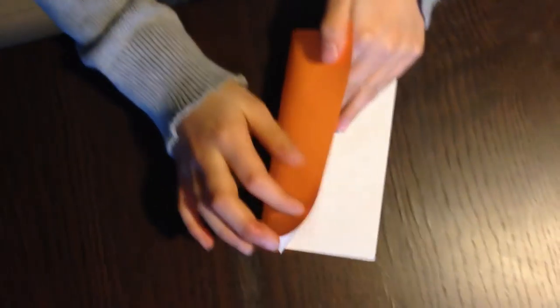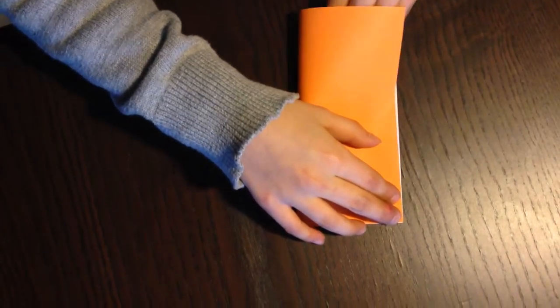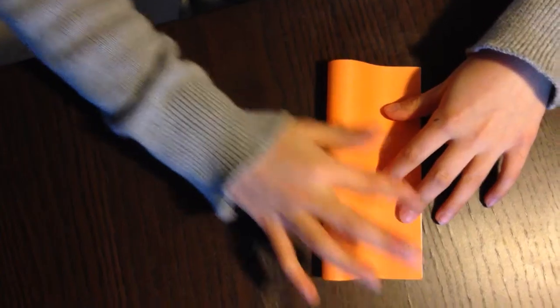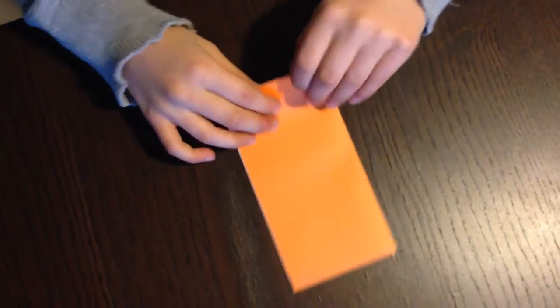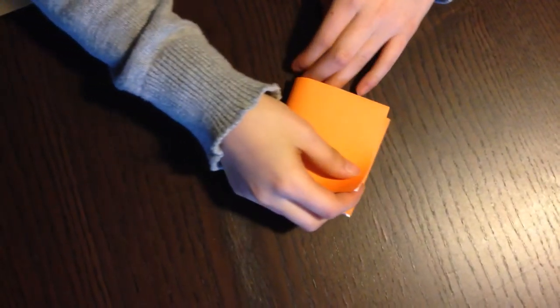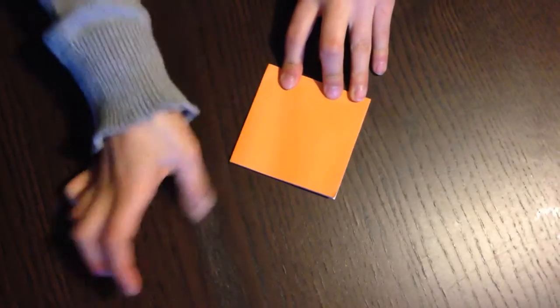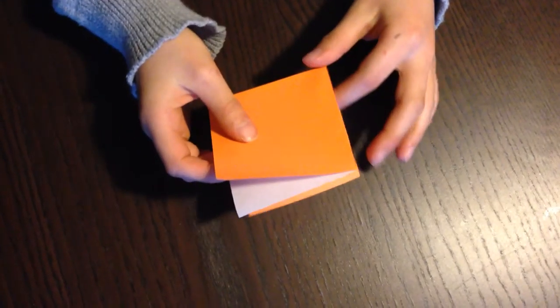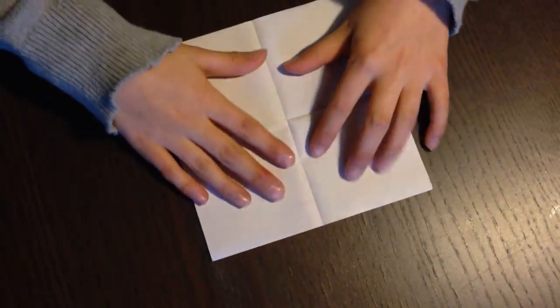So let's start. First, you fold it in half to make a rectangle. Next, fold it again in half to make a square, then open it up and have the right side near you.